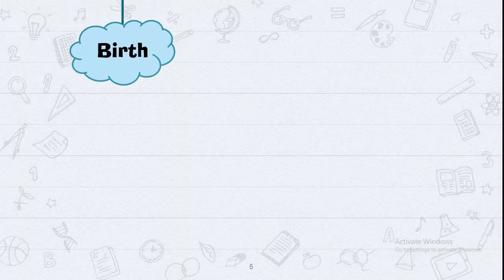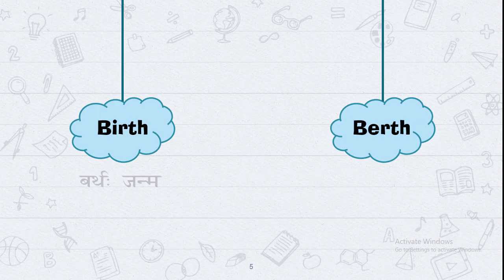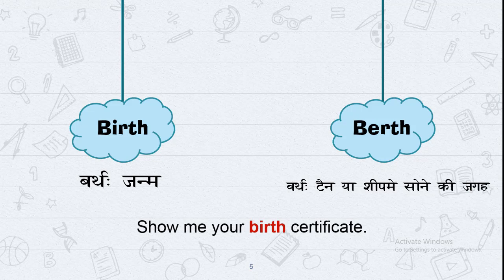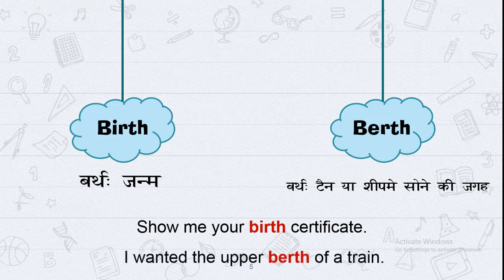The next pair is Birth and Berth. Same pronunciation. Birth means Janma — like 'give me your birth certificate.' And the second, Berth — B-E-R-T-H — is the sleeping place on a train or ship. Example: 'Show me your birth certificate' for Birth. And: 'I wanted the upper berth of the train, but my ticket gave me the lower berth.' So Berth means sone ki jagah on a train.